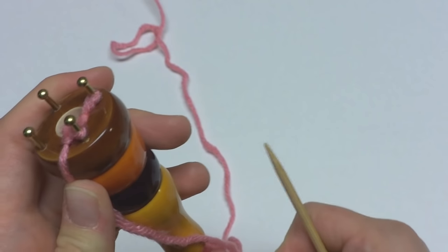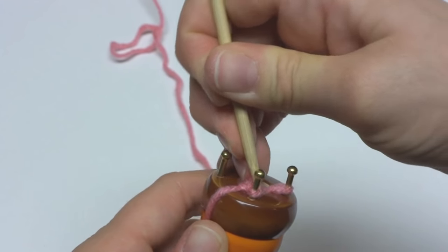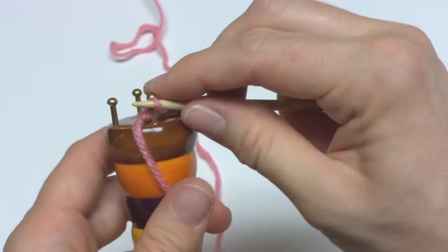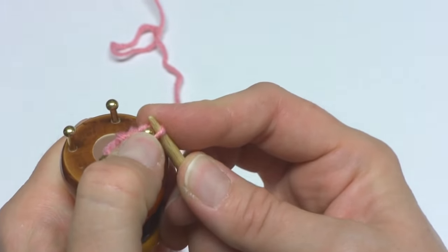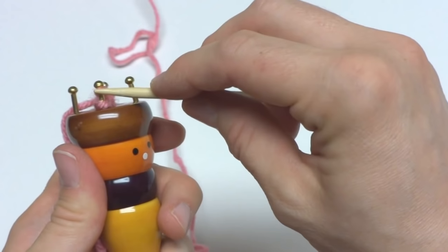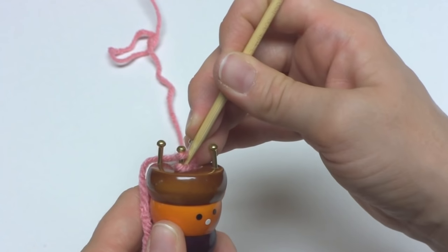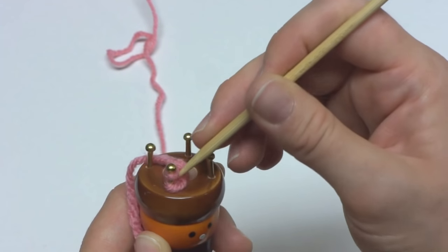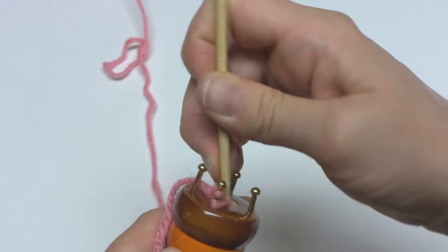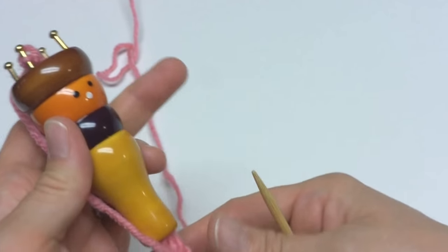Again, giving this a tug here and there will help you see everything. Sometimes at the end it gets a little bit bunchy. But lift that loop up and over onto the peg that's next to it. So you'll be left with two loops on your peg. And then you can take that last bottom loop that will remain and lift it up and over just like that.